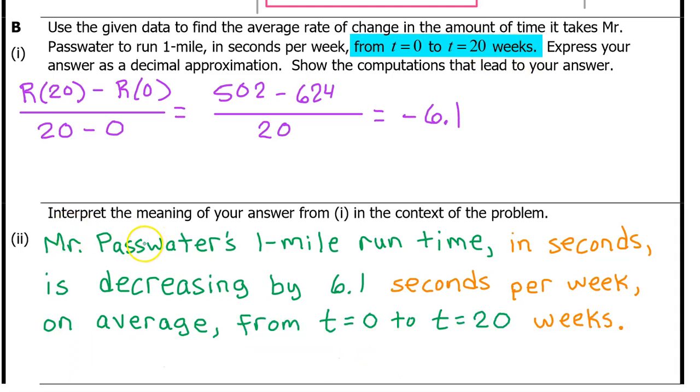Let's review. Your interpretation of the average rate of change should have three parts to it. First, you state the meaning of the main function with units. Second, you describe how fast the main function is increasing or decreasing with units, which are always included. And finally, you state the time interval over which the average rate of change was calculated, not forgetting the units. Putting it all together, we have Mr. Passwater's one-mile runtime in seconds is decreasing by 6.1 seconds per week on average from t = 0 to t = 20 weeks.